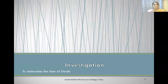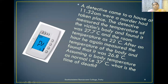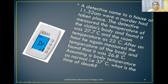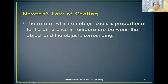Now let us see how mathematics is used in investigation — that is, to determine the time of death of a person. A detective came to a house at 11:32 AM where a murder had taken place. The detective measured the temperature of the victim's body and found it was 27.7 degrees centigrade, and the room temperature was 22.22 degrees centigrade. After an hour, he again measured the temperature of the victim's body and found it was 26.8 degrees centigrade. We assume the normal body temperature was 37 degrees centigrade. For calculating the time of death, we need the help of Newton's law of cooling. Newton's law of cooling states that the rate at which an object cools is proportional to the difference in temperature between the object and its surroundings.